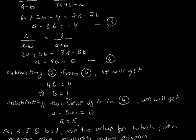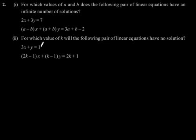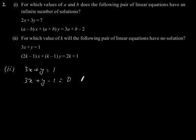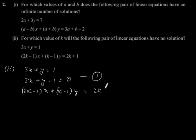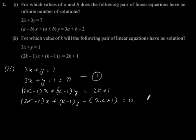The second part: for which value of K will the following pair of linear equations have no solution? The given equations are 3x plus y is equal to 1, which can be written as 3x plus y minus 1 is equal to 0 — let's say this is equation 1 — and (2k minus 1)x plus (k minus 1)y is equal to 2k plus 1, which can be rewritten as (2k minus 1)x plus (k minus 1)y minus (2k plus 1) is equal to 0. Let's say this is equation 2.